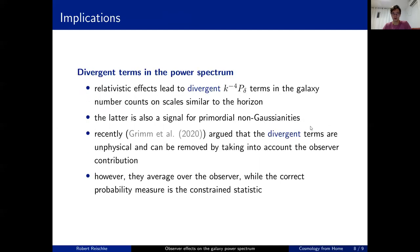Let me jump to some discussion of the results. First, I would like to make a point about these divergent terms. There was a paper quite recently by Grimm et al. which discussed these divergent terms. The divergent terms go with k^-4 times the power spectrum of the matter, which goes with k^1 on very large scales, so you have a divergence with k^-3. These terms become important on the scale of the horizon. This is interesting because you find a very similar signal when you look for primordial non-Gaussianities in the power spectrum.